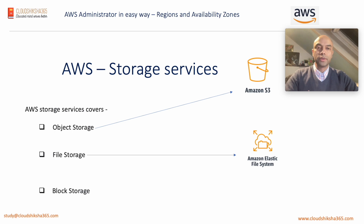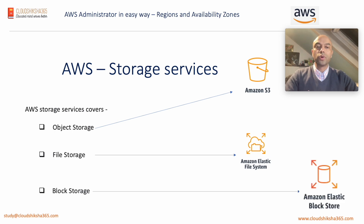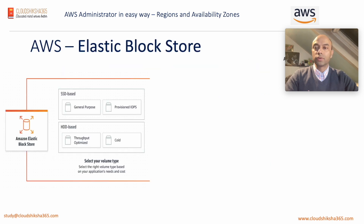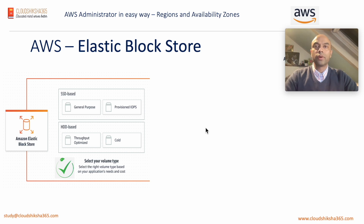The next one is block storage, also called Amazon Elastic Block Storage or EBS. If you remember, during instance creation the first step involved selecting a volume — that volume is actually an Elastic Block Store. From there you can select general purpose SSD or HDD (hard disk drive) based storage. We selected general purpose storage because it is cost effective and also gives good performance.